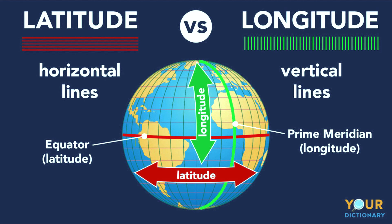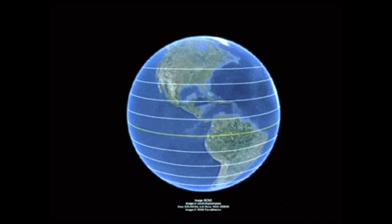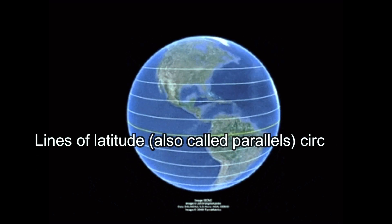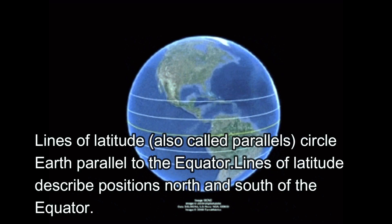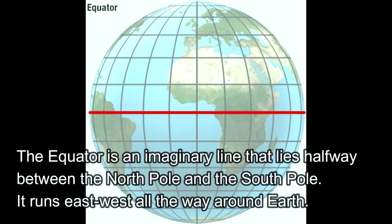Lines of latitude are also called parallels and circle the earth parallel to the equator. They describe the position north and south of the equator. The equator is an imaginary line that lies halfway between the north and south poles, running in the east and west direction all around the earth.